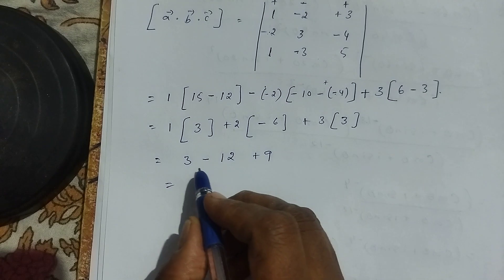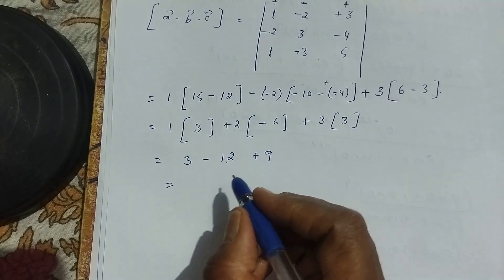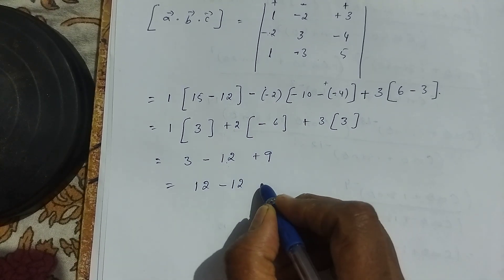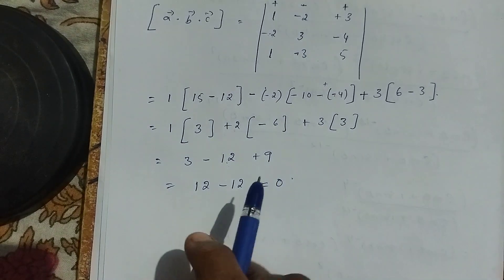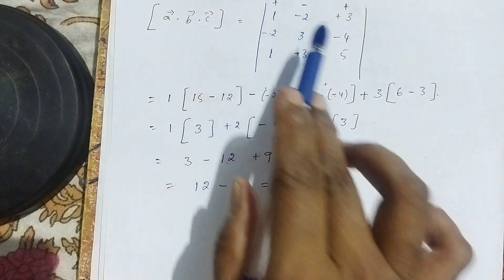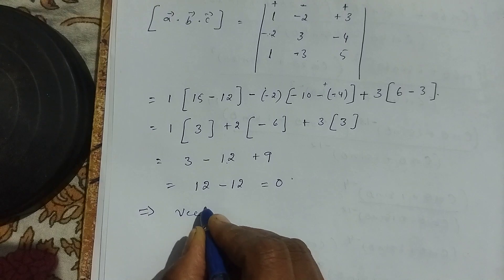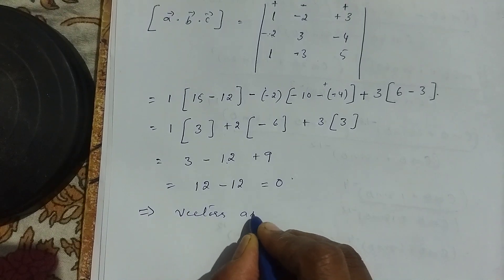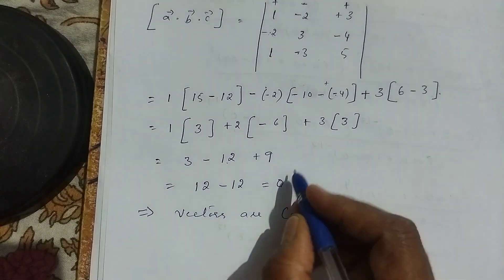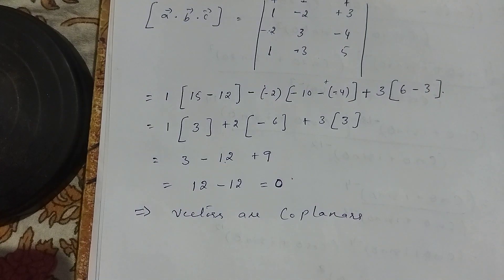So 3 plus 9 minus 12 equals 0. We get 12 minus 12, which equals 0. The value of the determinant is 0. This implies that the vectors are coplanar. If the determinant were not 0, the vectors would not be coplanar. Thank you for watching — please like and subscribe to my channel.